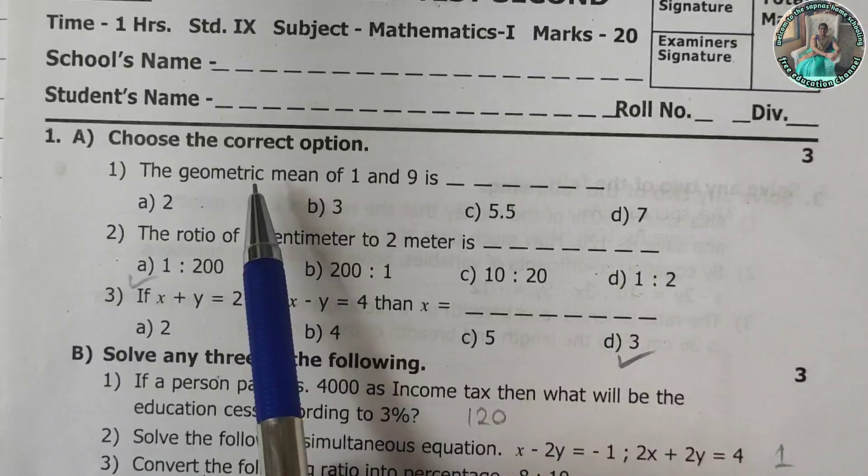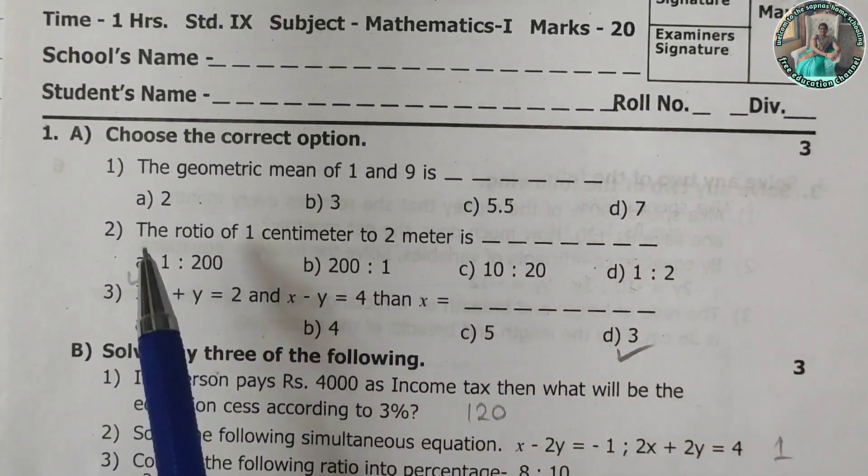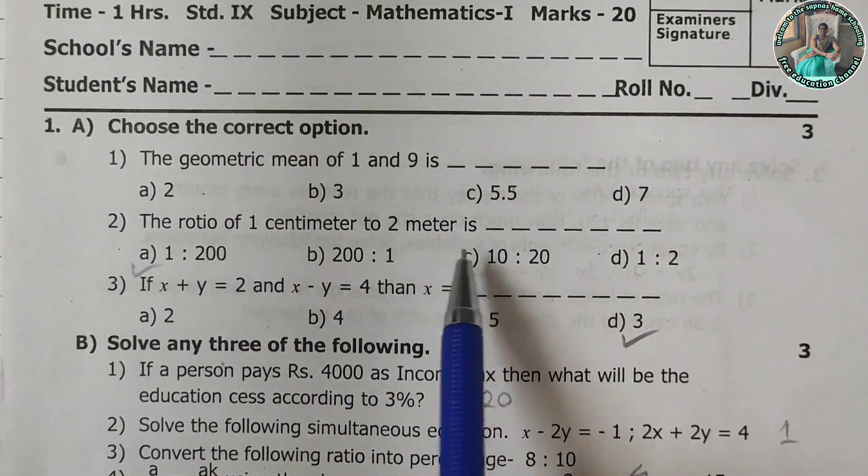Choose the correct option. The geometric mean of 1 and 9 is... So you have to choose from the correct alternatives, 4 alternatives given. The ratio of 1 centimeter to 2 meter is 1 is to 200.